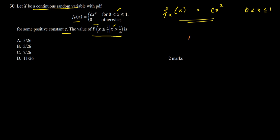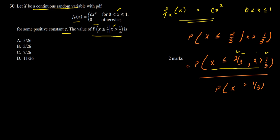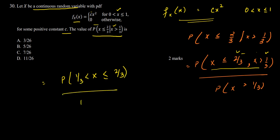This is a conditional probability, which can be written as P(X ≤ 2/3 | X > 1/3) = P(1/3 < X ≤ 2/3) divided by P(X > 1/3). In the numerator, X lies between 1/3 and 2/3, and in the denominator we have the probability X > 1/3.